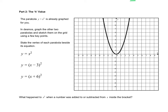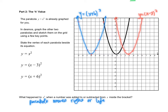Let's go to part 2. We're looking at the h value, which is inside the bracket with x. We have x minus 3 all squared and x plus 6 all squared. Pause the video, go to Desmos, sketch those two parabolas and make some observations. For x minus 3 squared, you should have a parabola shifted to the right 3. For x plus 6 squared, it has shifted to the left 6. You might think it's the opposite, but remember: it's actually the reverse of what you might logically expect.